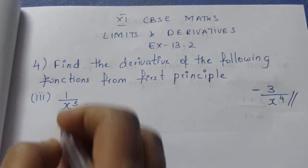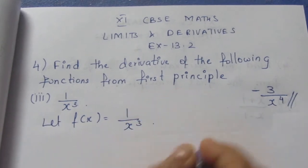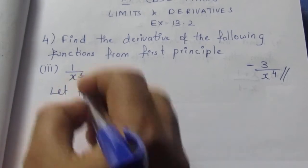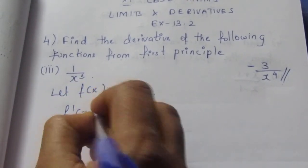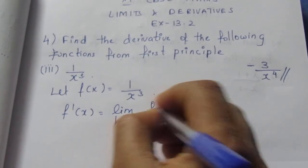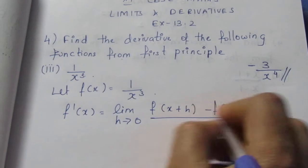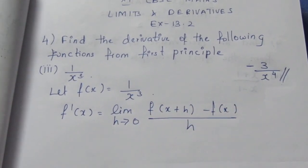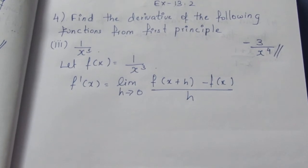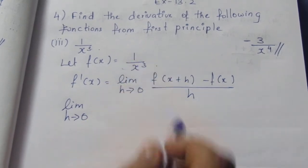We can solve it using first principle. Let f of x be equal to 1 by x cube. The derivative of f(x) is equal to limit h tends to 0 of f(x plus h) minus f(x), all divided by h. This is the formula.